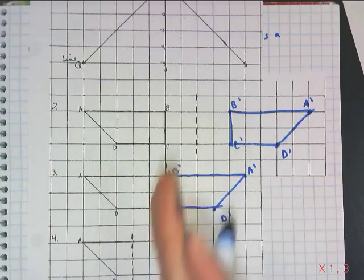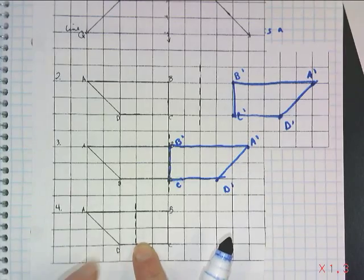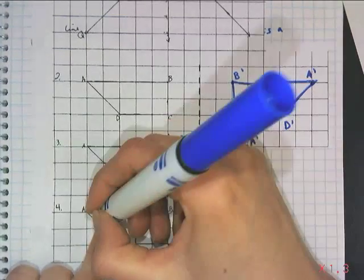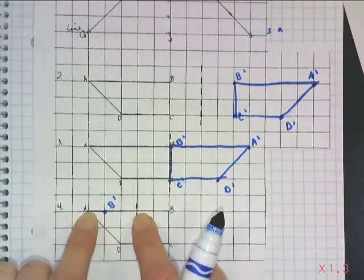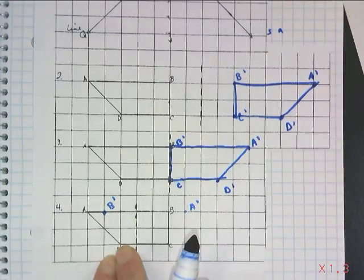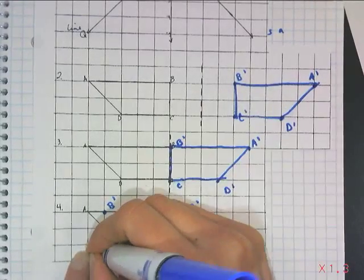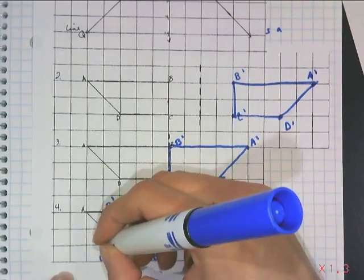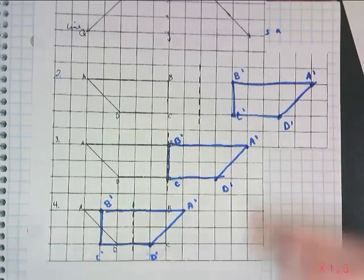When the line of reflection passes through the interior of the figure, you think the same way. If B is 2 units to the right of the line, B prime goes 2 units to the left. A was 3 to the left, so A prime goes 3 to the right. D was 1 left, so D prime is 1 right. C was 2 right, so C prime is 2 left. The reflected image is a different orientation but the same exact size.